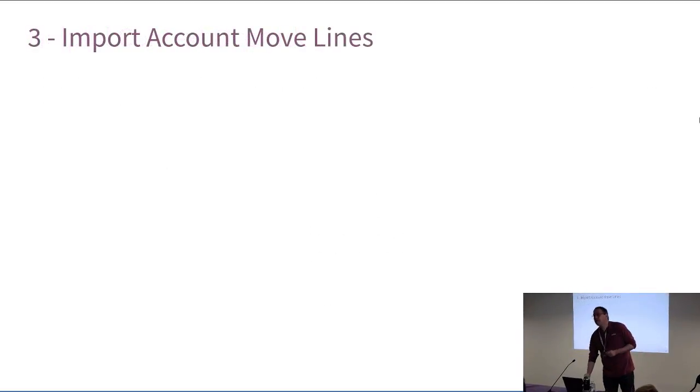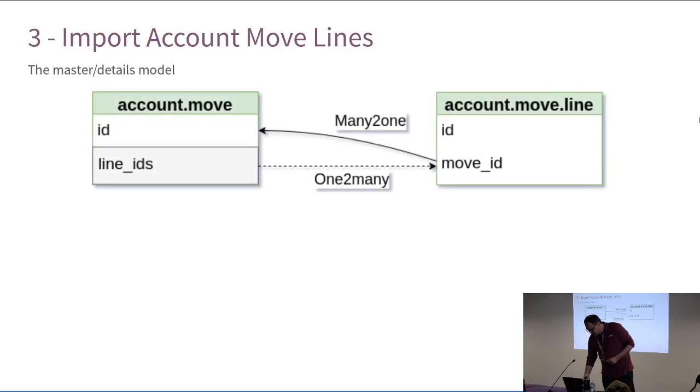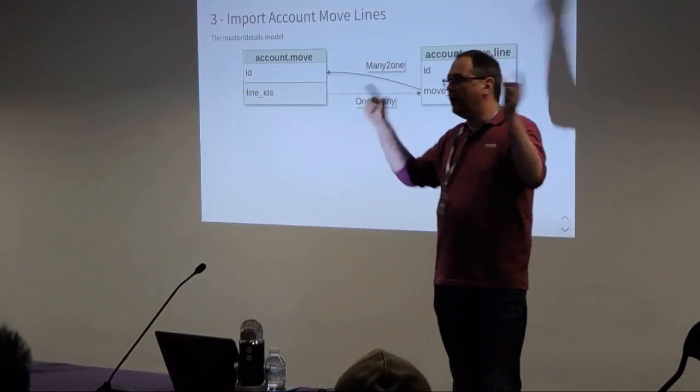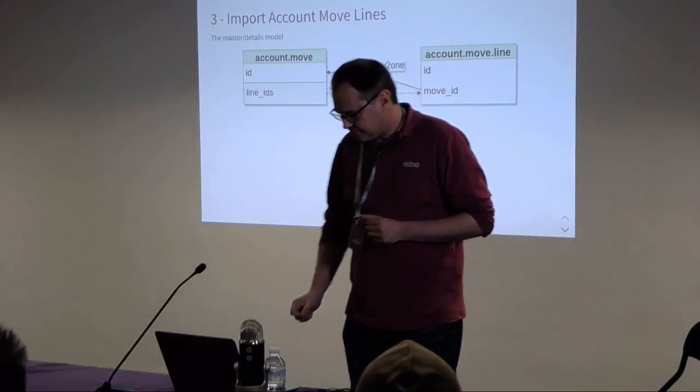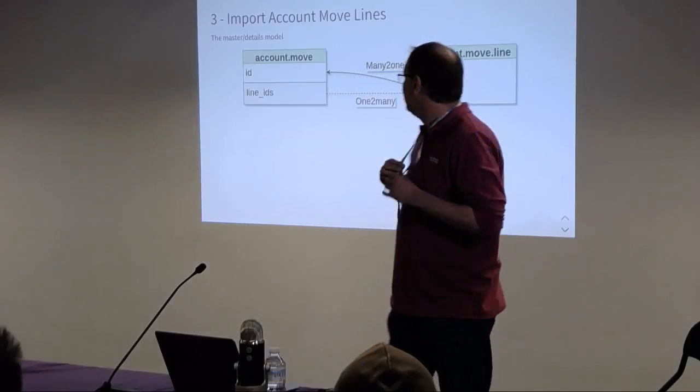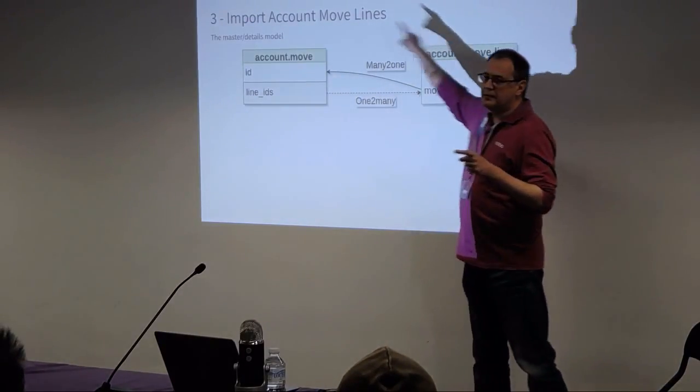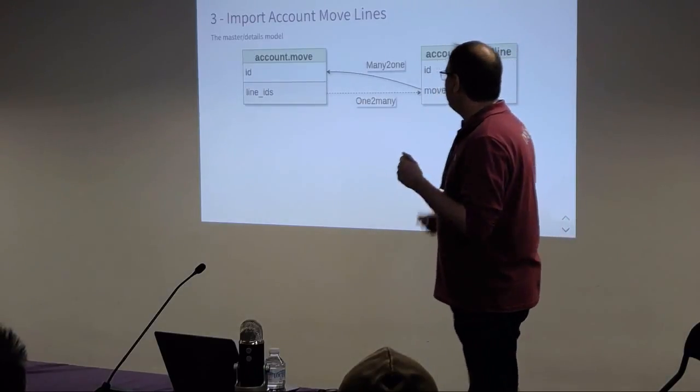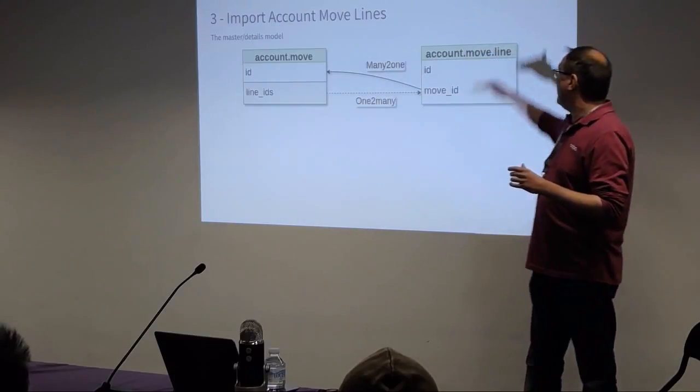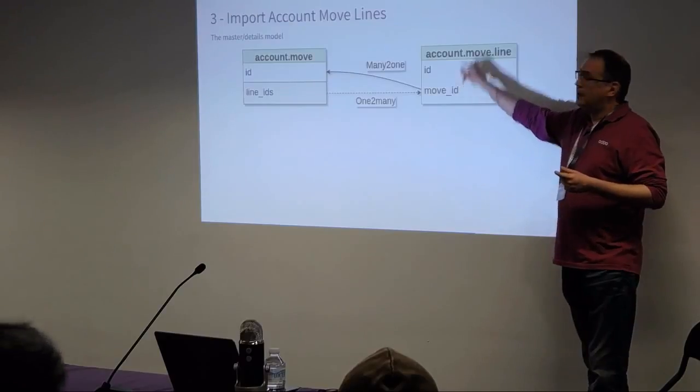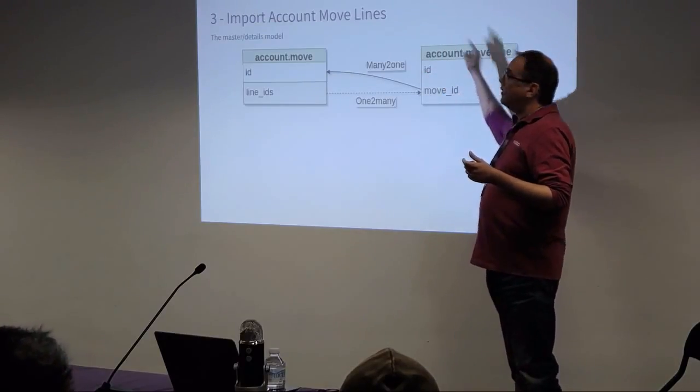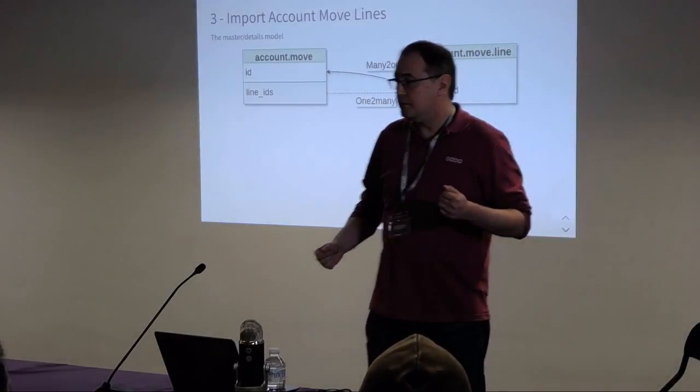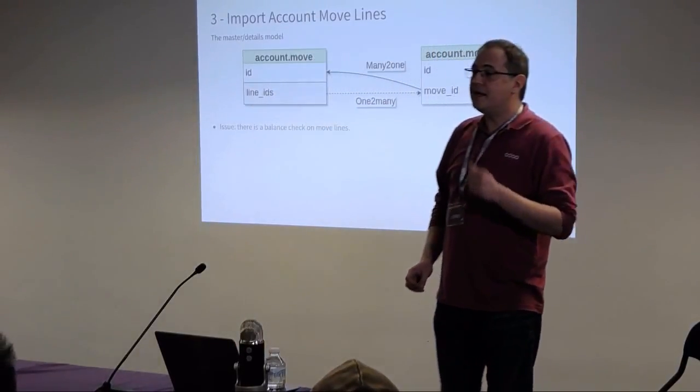The last use case I want to show you is how to import account move lines. Yeah, it's one example among others. But this is an interesting one. Just as a reminder, the account move line is a master-detail model. I have the account moves and the related account move lines in another model. And all are linked with the many-to-one and one-to-many fields. So, how could we import it? If you remember what I said, the XML ID must be imported before. And you can tell me, hey, John, I know. I will import first all my account moves with the XML ID and then all my account move lines with the XML ID here of the account. And it will be okay because the XML IDs here are already imported. But I will say to you, no, it won't work.